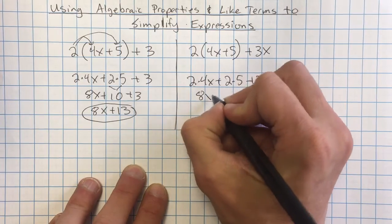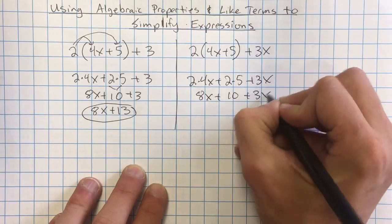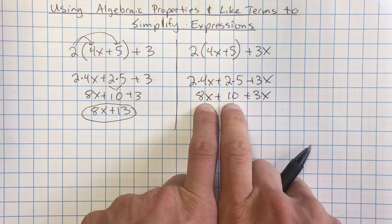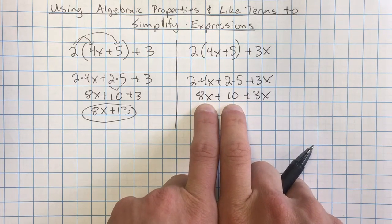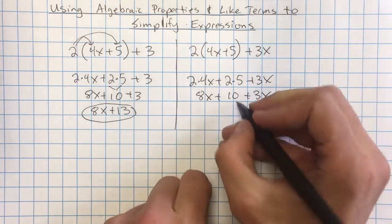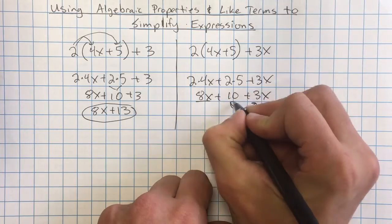Multiply the parts that I can. 8x plus 10 plus 3x. And now I want to combine the terms that are present. Now I cannot combine that 8x and the 10 because this is whole numbers and this is x's. So I can't do that. But I can combine the 8x and the 3x.